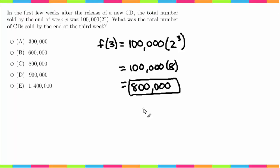So by the end of the third week, 800,000 CDs will have been sold, which is answer choice C. If you had any trouble with this question, I would recommend reviewing exponential functions.